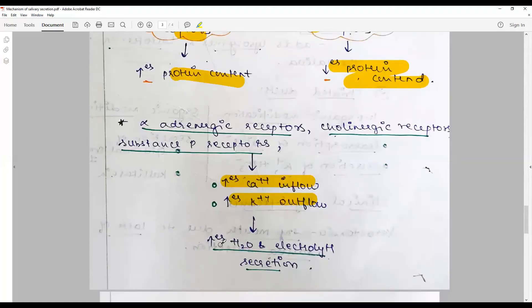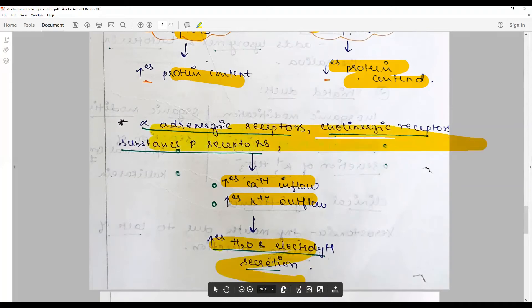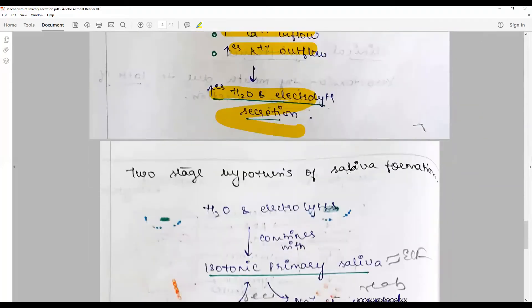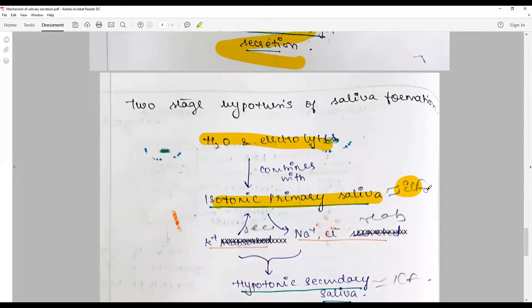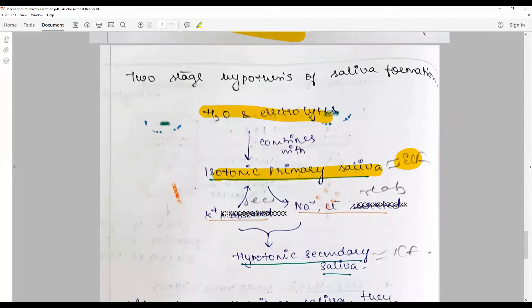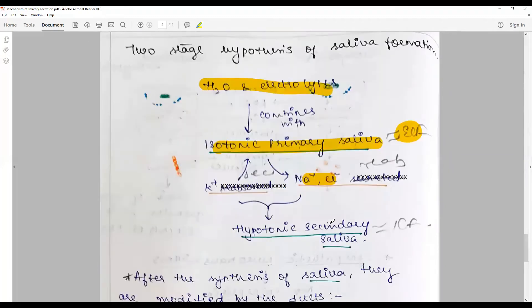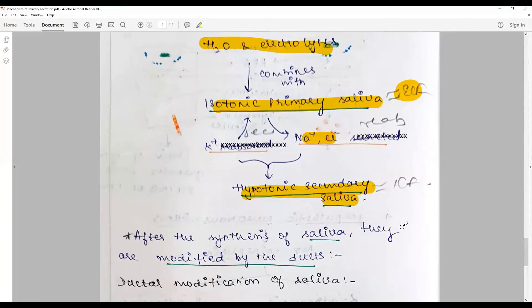The two-stage hypothesis of saliva says that in the acinus, the water and electrolytes are combined to form the isotonic primary saliva, which is comparatively high to the ECF. After which, there is a modification: potassium is secreted, sodium and chlorides are reabsorbed, leading to hypotonic saliva, which is very similar to or a little bit less than your blood extracellular fluid. Isotonic primary saliva is equivalent to extracellular fluid; hypotonic saliva is equivalent to intracellular fluid.